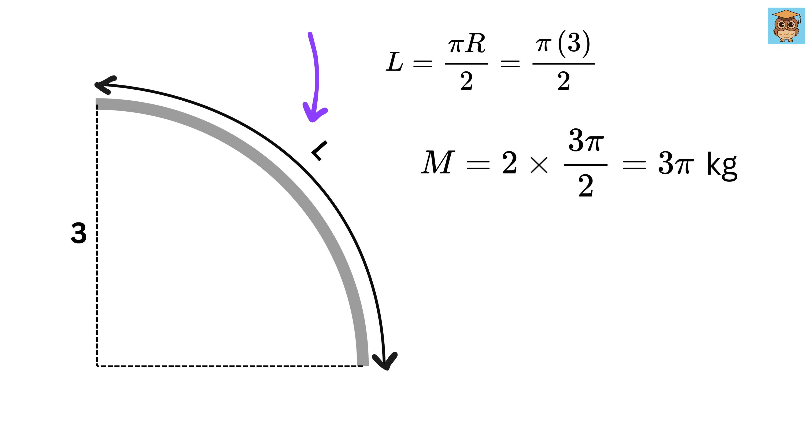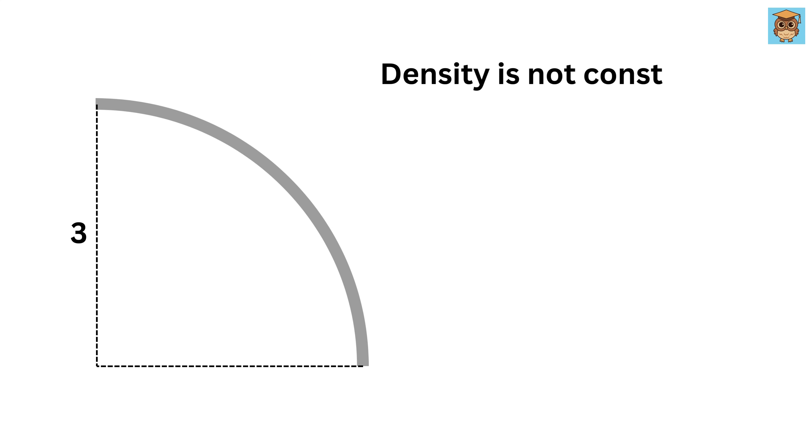This is just like finding the mass of a straight rod. Nothing complicated yet. But now, let's make things more interesting. Let's say the density is not constant. Instead, the density of the wire depends on where it is placed in space.